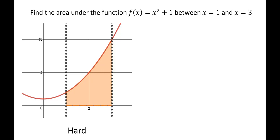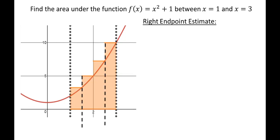Finding the area of rectangles was easy, so let's stick with what we know. We can divide this into four different rectangles. We'll do that using a right endpoint estimate to start off. We're dividing it into four different regions, and to estimate the area under the curve we find the area shown by these four rectangles. We call it a right endpoint estimate because we use the value at the right of each interval for the height. We have four rectangles, so n equals 4.